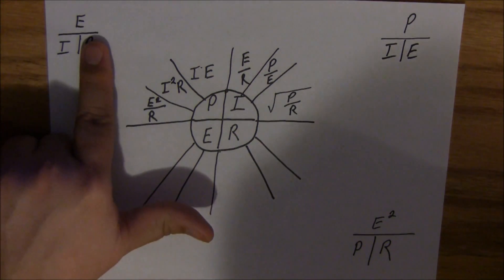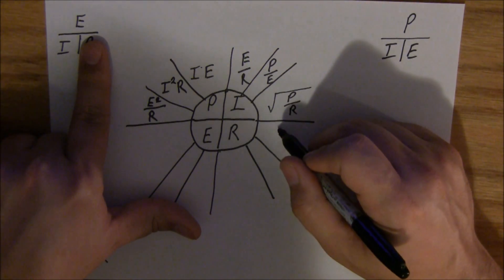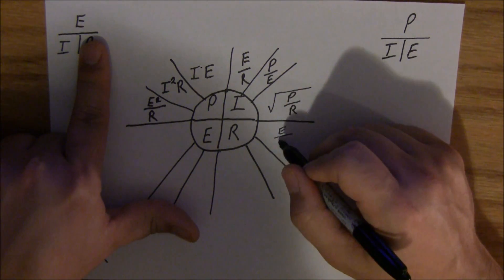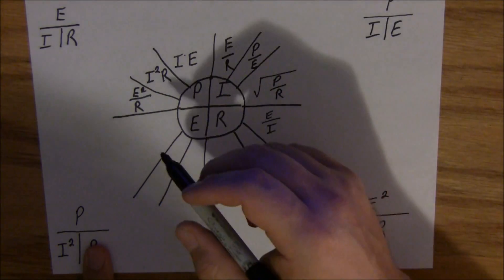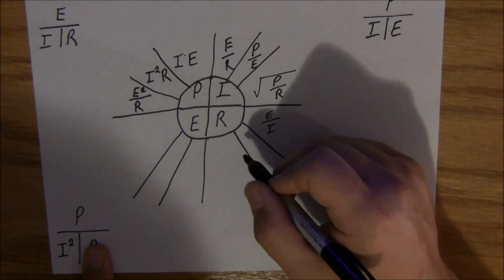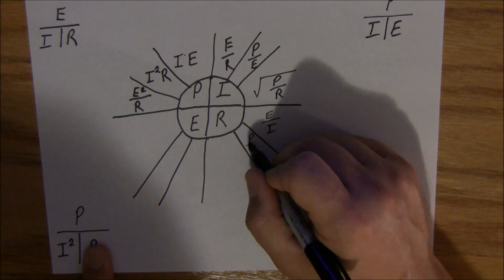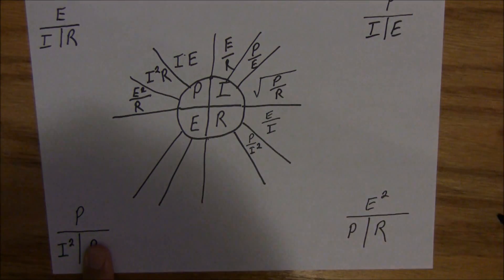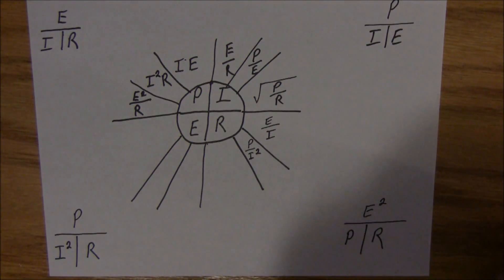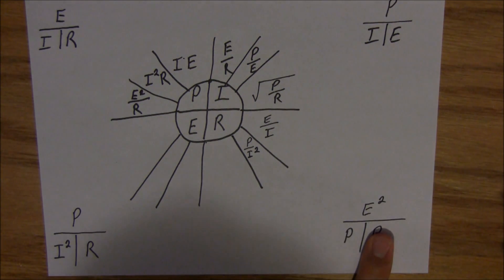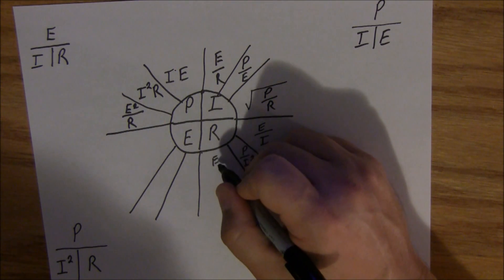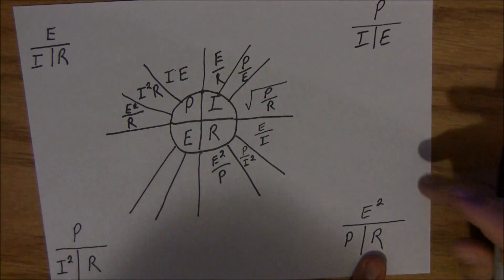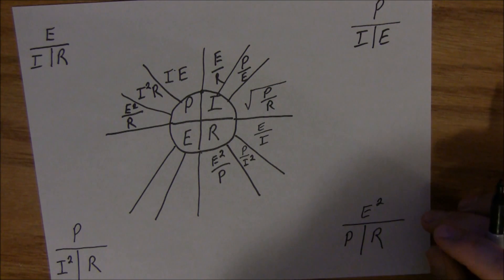Resistance, same way. Let's cover up our R up here. Resistance is equal to E divided by I. Let's cover up resistance here. R is equal to P divided by I squared. And let's cover up R here. E squared divided by P equals resistance. So E squared divided by P. Easy peasy.